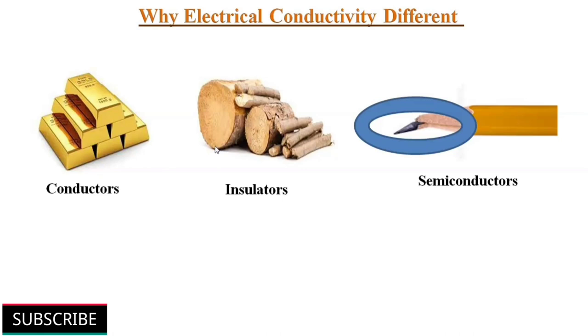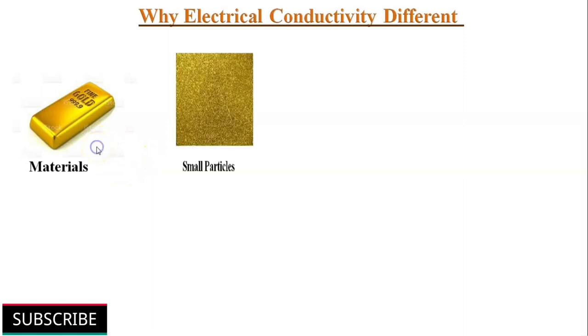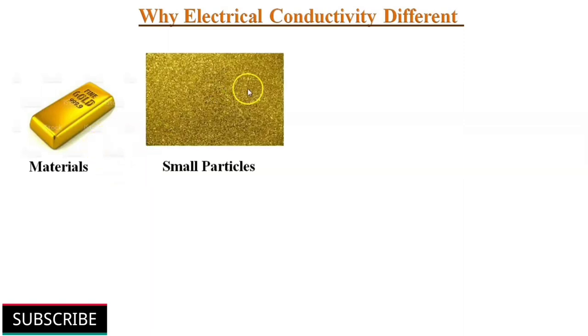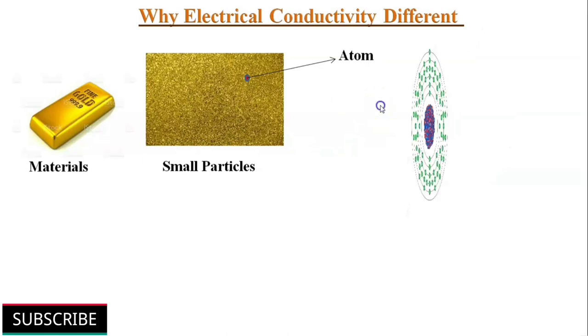But why is electrical conductivity of conductors, insulators and semiconductors different? All the materials are composed of very small particles. These small particles are called atoms. The atoms are the building bricks of all materials.